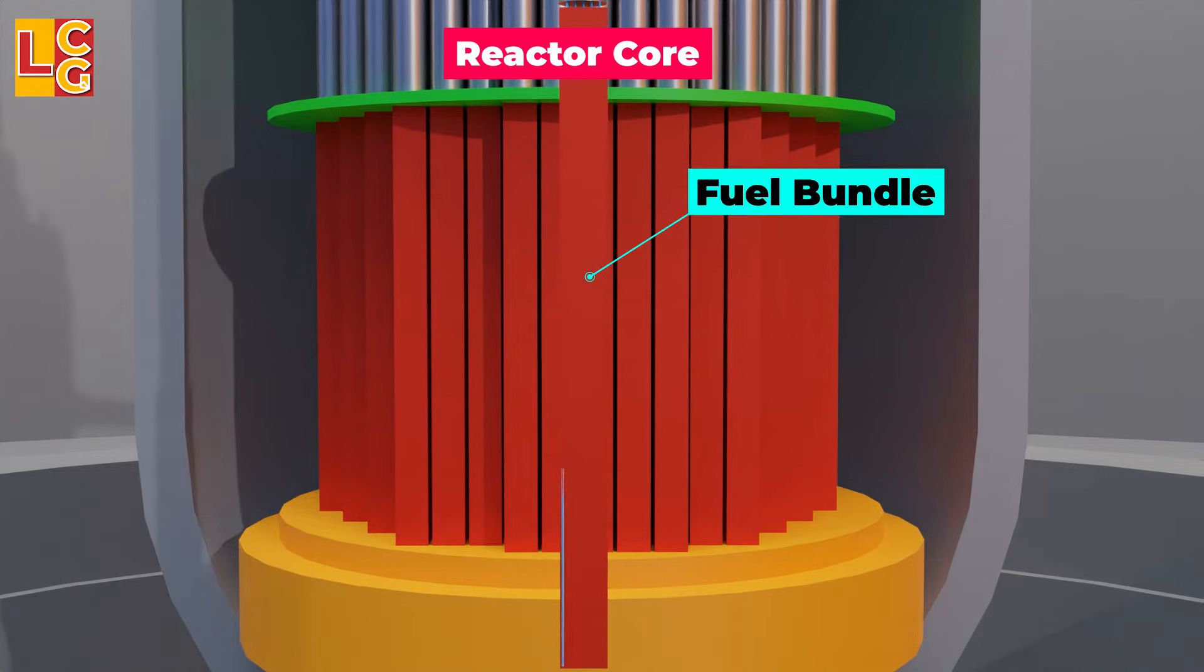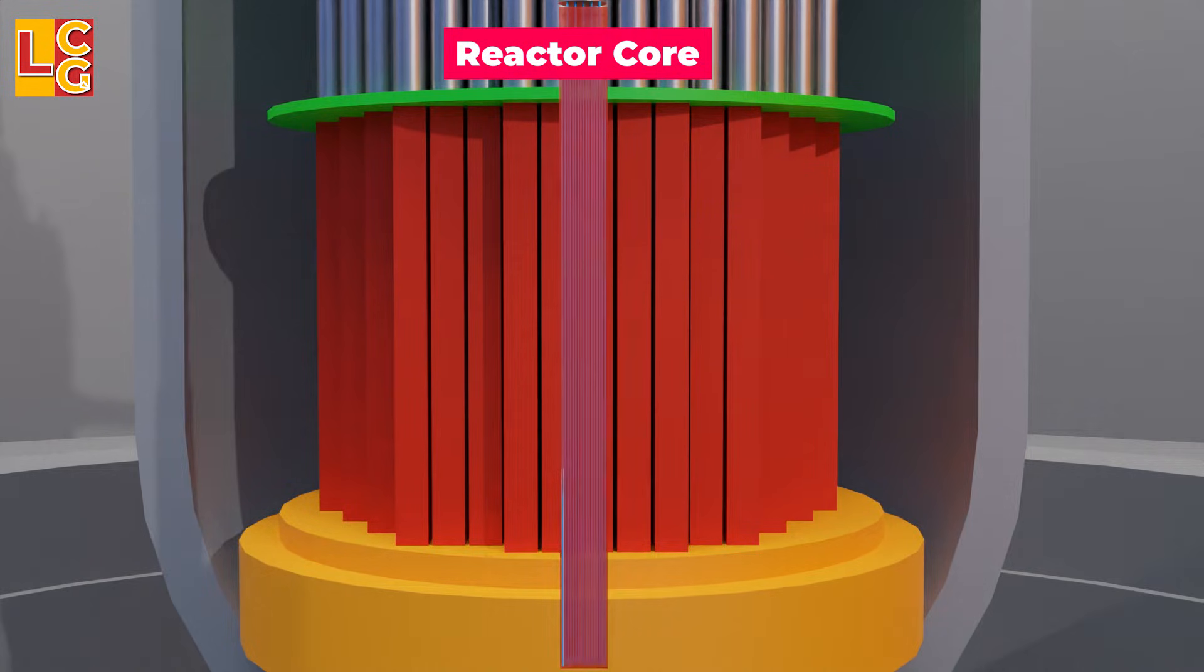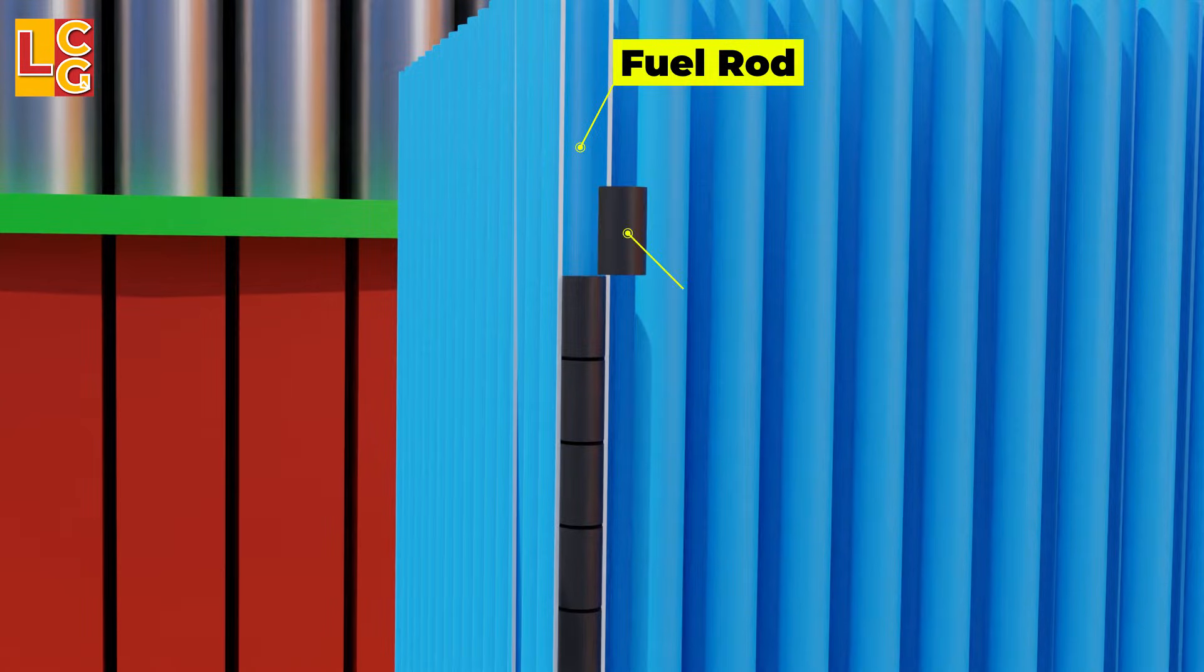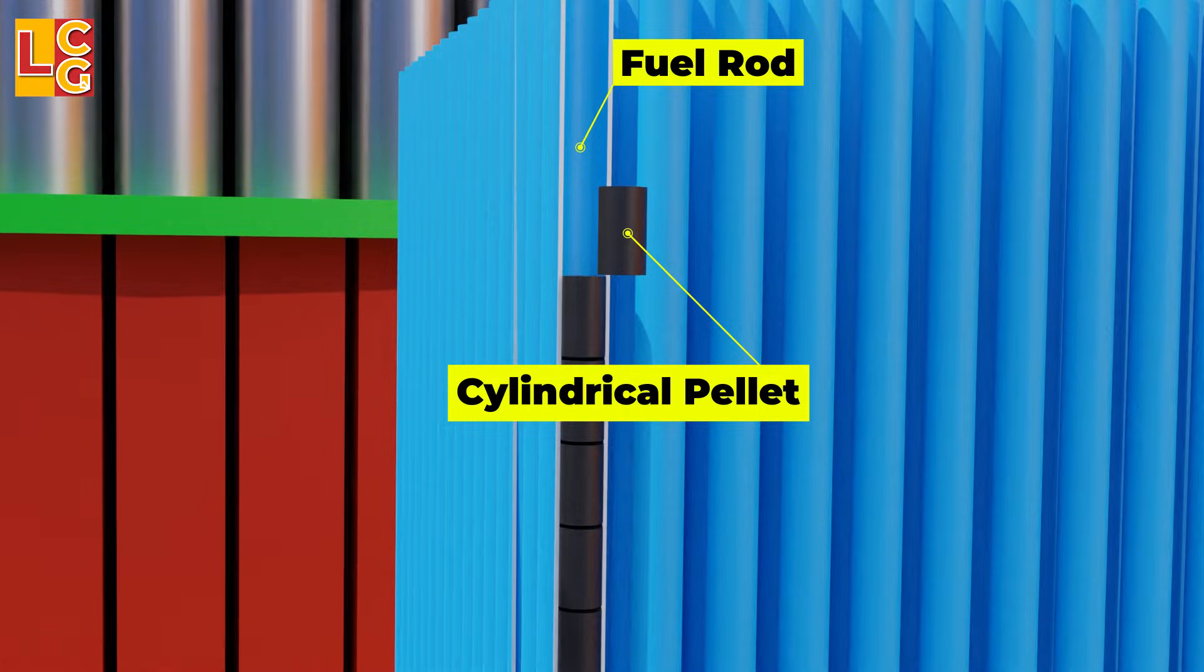The core is a collection of fuel bundles, and a fuel bundle is a collection of rods with cylindrical pellets inside. These pellets are made of a fissile chemical element like uranium dioxide.